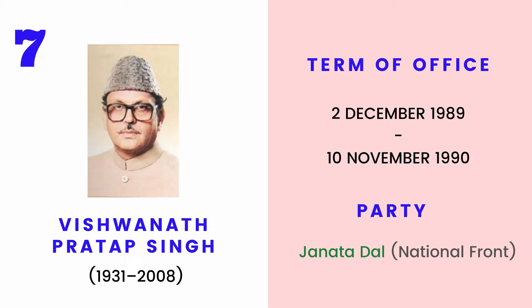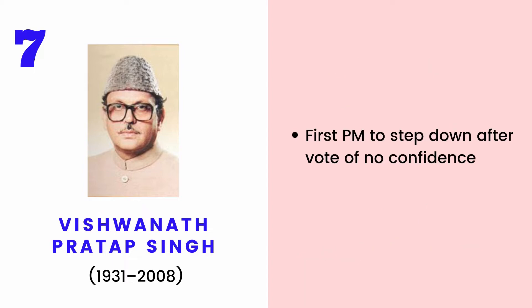Vishwanath Pratap Singh was the 7th Prime Minister of India from 1989 to 1990. He was the first PM to step down after a vote of no confidence.